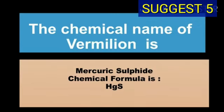The chemical name of vermilion is mercuric sulfide and chemical formula of vermilion is HgS.